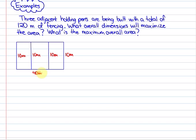So these two lengths would be 40 meters in total. This area of the total enclosure would be 10 times 40 would be 400 meters squared. Our goal in this problem is to use quadratic functions to create a maximum area for these pens with 120 meters of fencing.